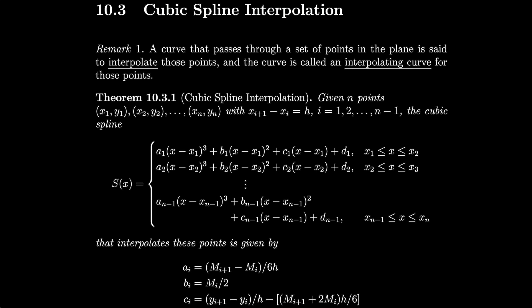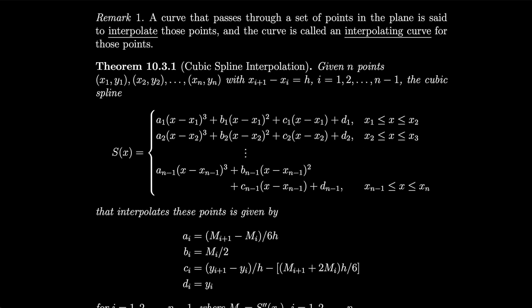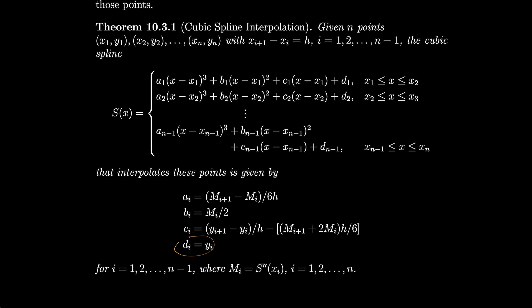And the coefficients are what's important here. They are given by ai = (m(i+1) minus mi) over 6h. Bi's are given by mi over 2, and the ci's are given by (y(i+1) minus yi) over h minus (m(i+1) plus 2mi)h divided by 6. The di is just yi.